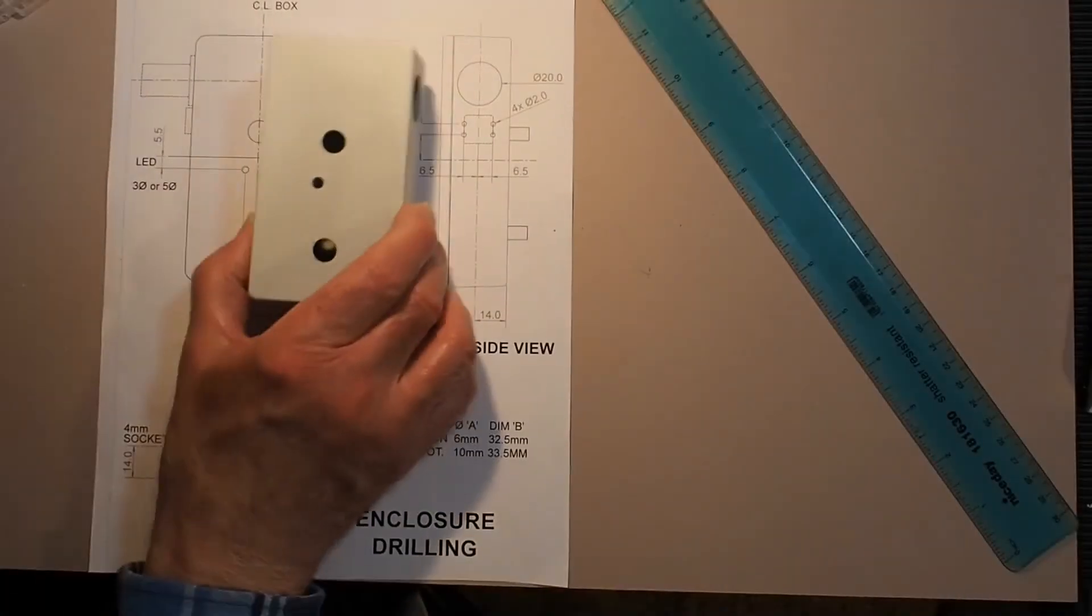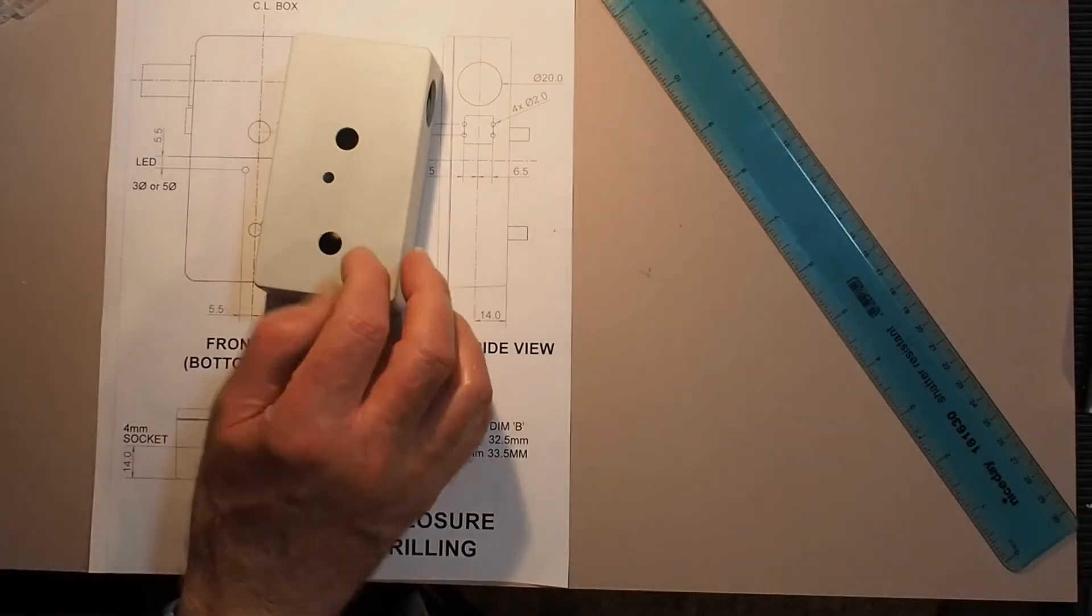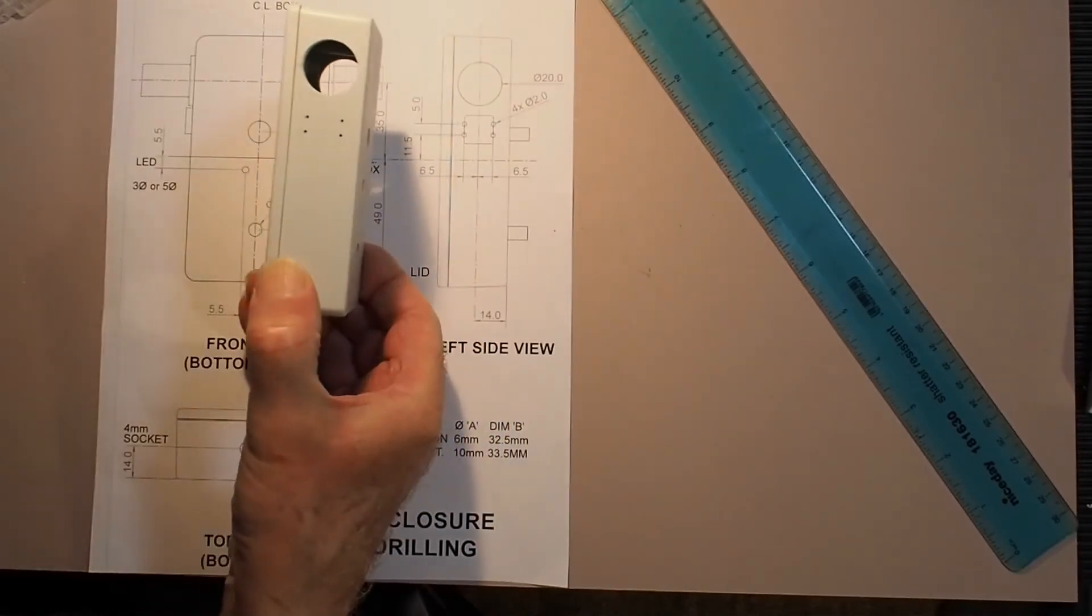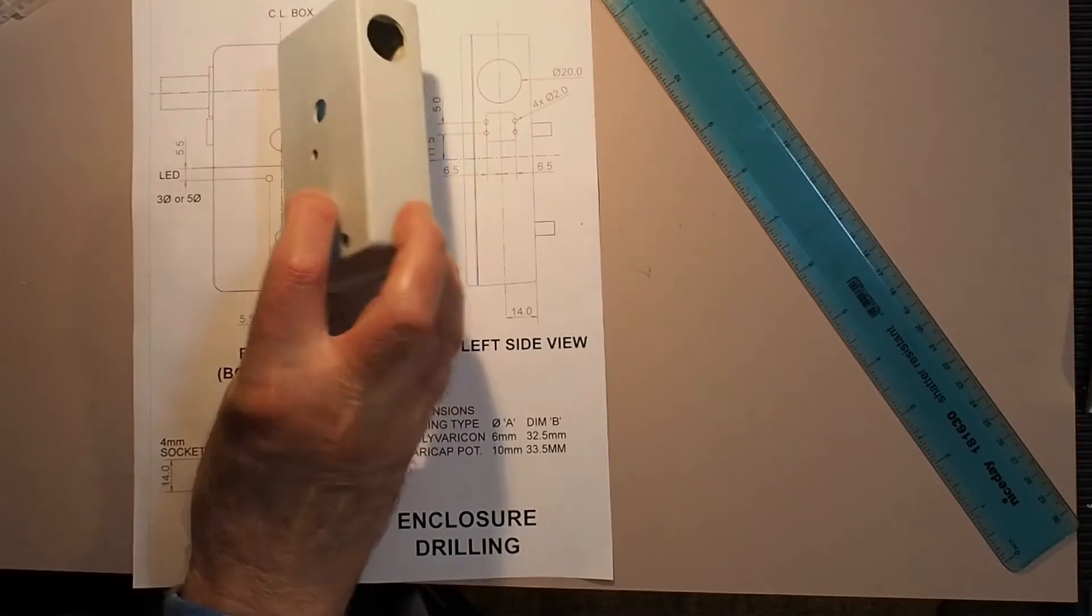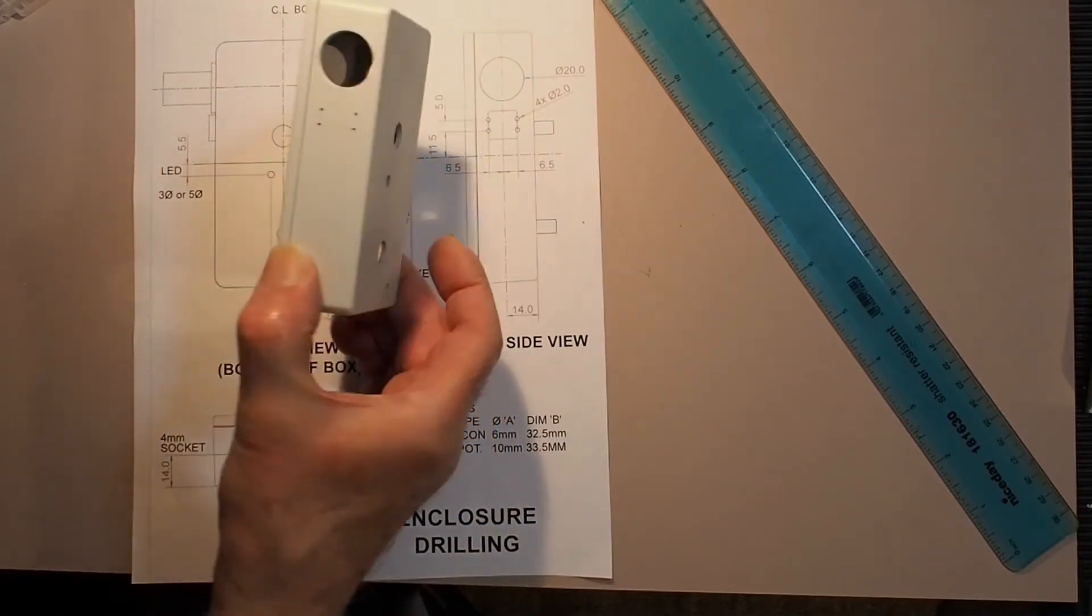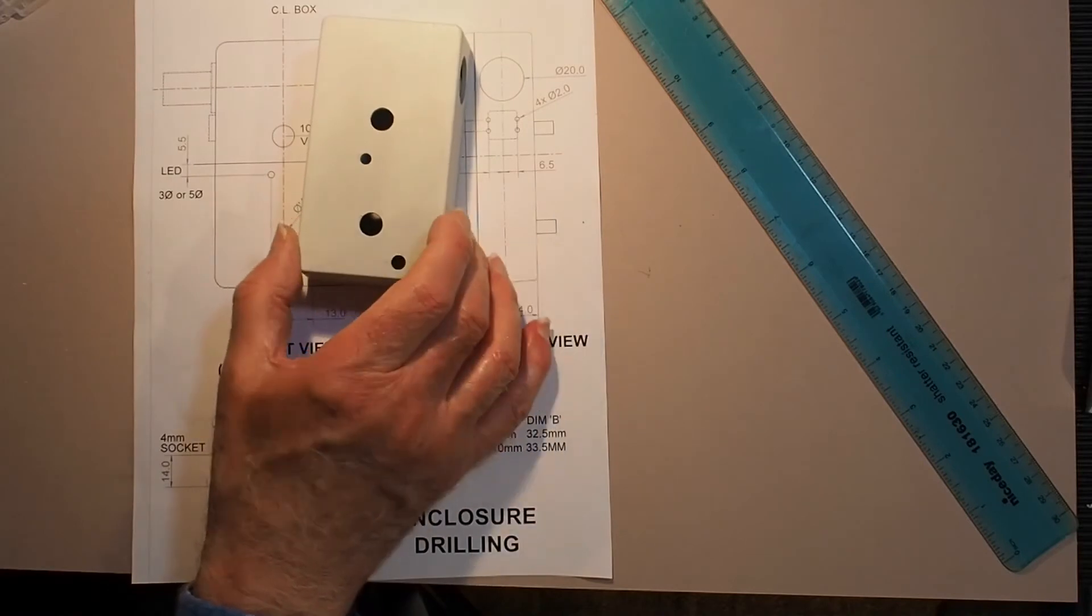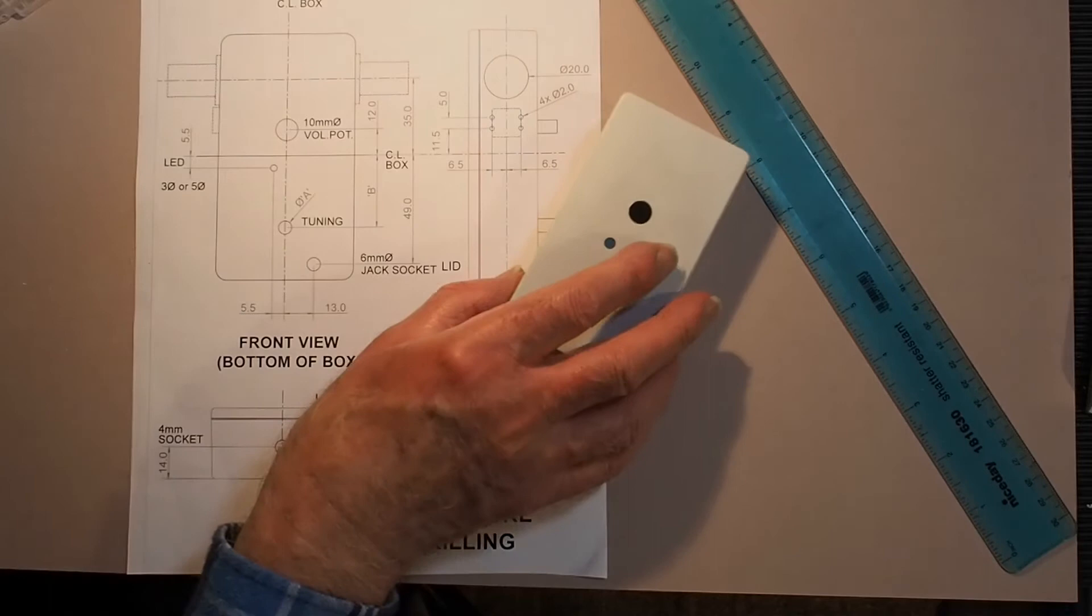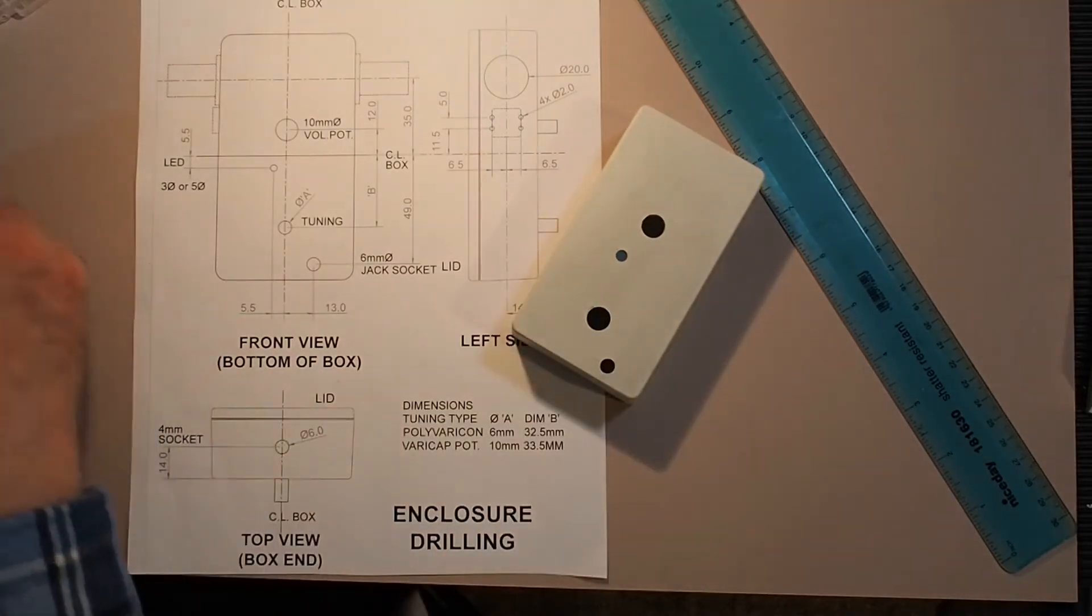Okay, well here is the completed box with all the holes drilled and the marking out lines all removed. That's looking pretty good. One thing I discovered when I went out to the garage to drill the holes, something I'd forgotten, was that I had already these special drills.